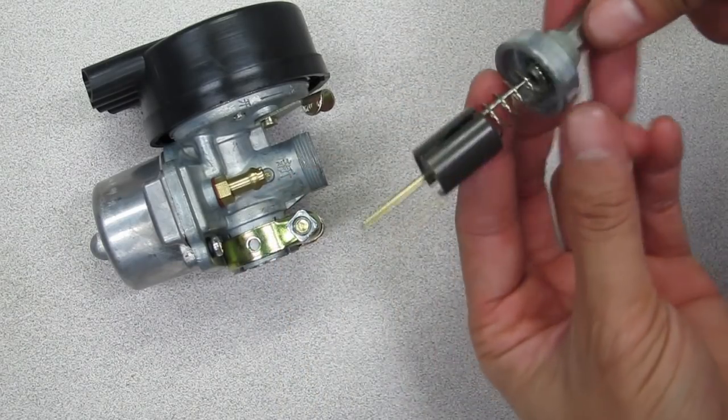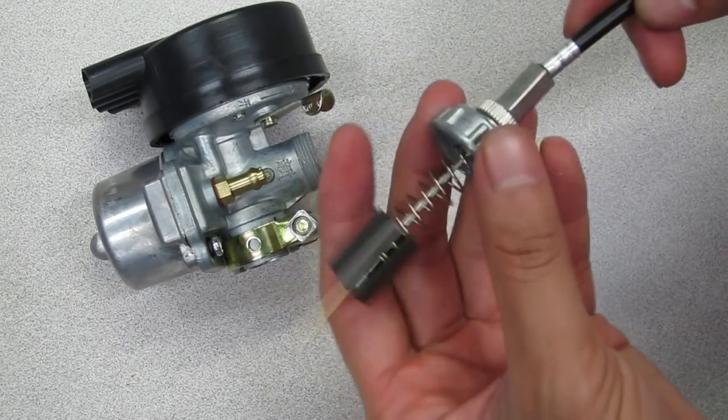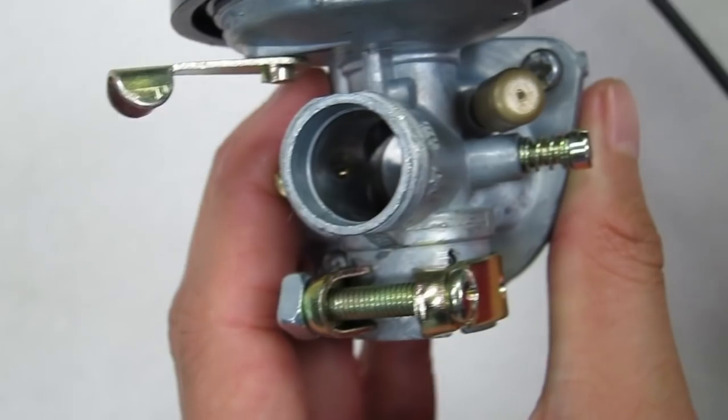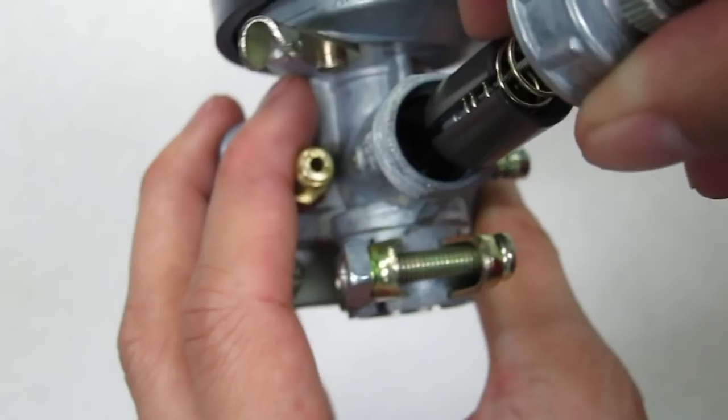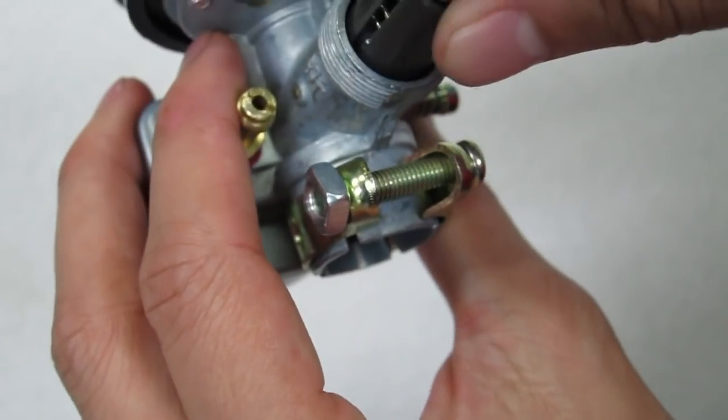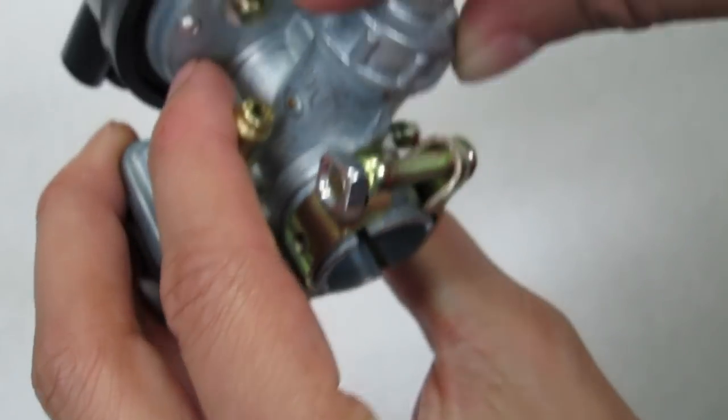Once you let go of the spring, it should hold everything in place. When reinstalling it back into the carburetor, make sure the slit side on the plunger is facing the guide peg located on the inside of the carburetor. Insert the assembly slowly, then screw it back down.